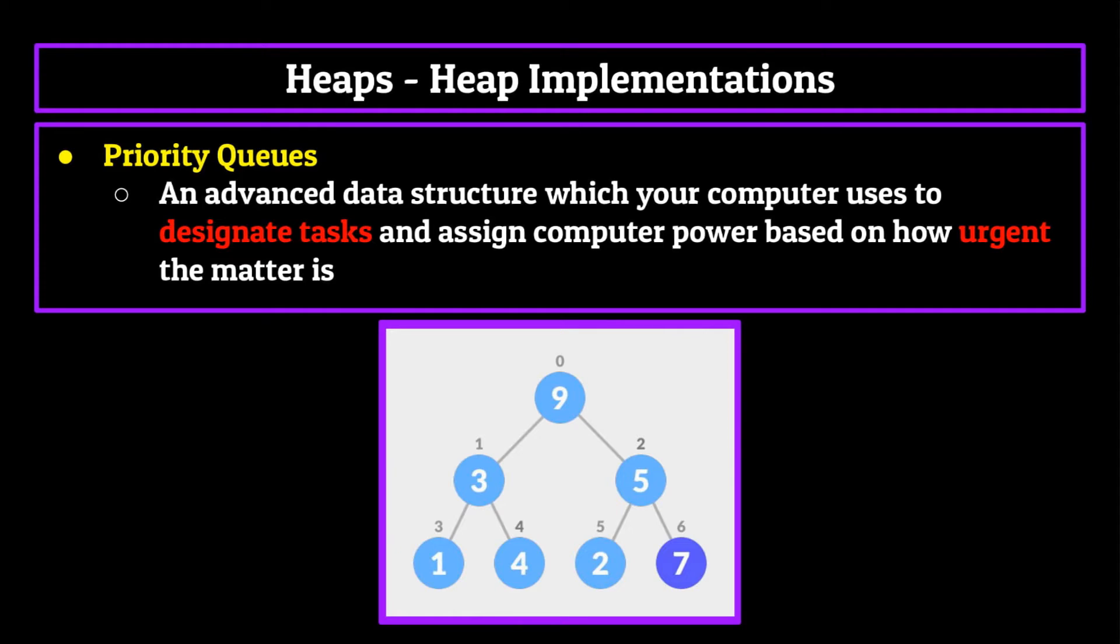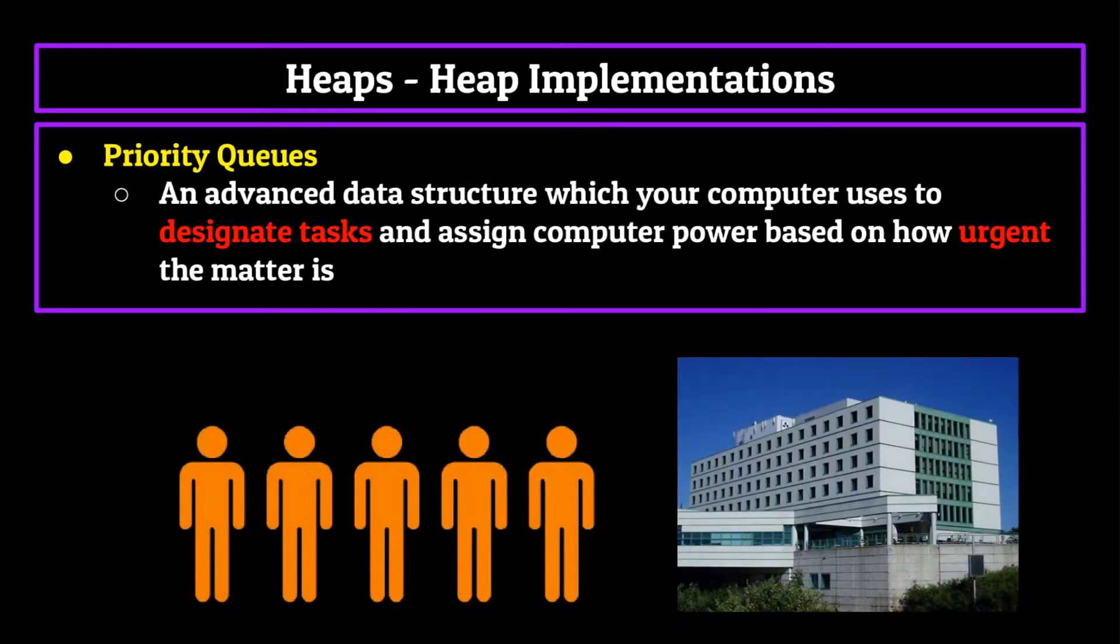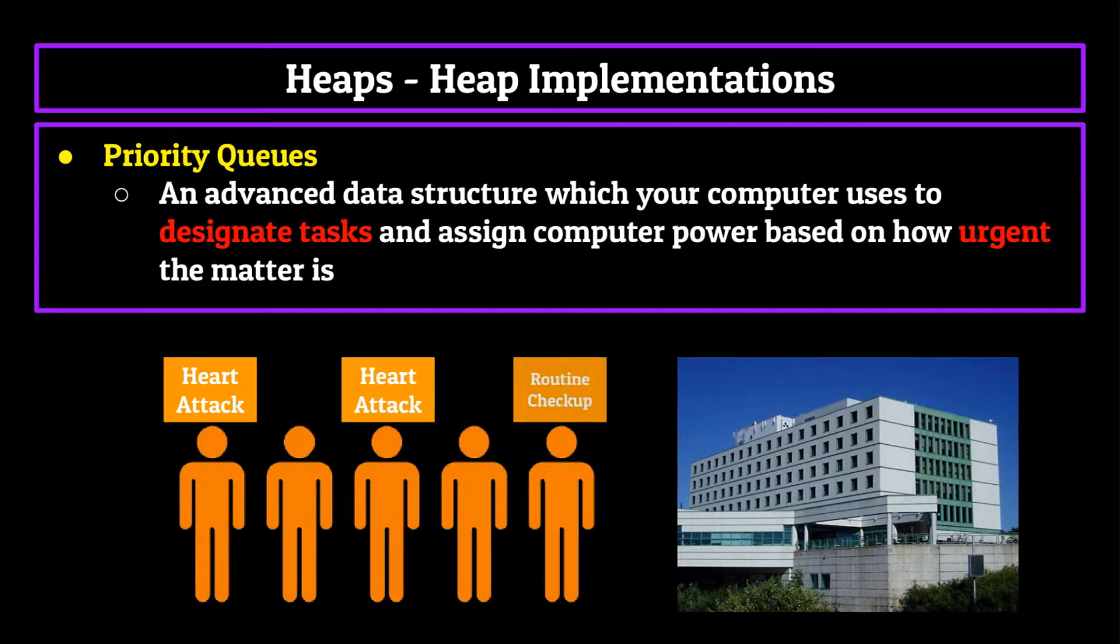Another extremely popular use of heaps is through the implementation of priority queues. Priority queues are an advanced data structure which your computer uses to designate tasks and assign computer power based on how urgent the matter is. Think of it like a line at the hospital, you wouldn't want your line to follow a regular queue that implements the FIFO or first in first out methodology. Since then you could have patients with extremely urgent matters like a heart attack, waiting behind people coming in for a routine checkup. In the same way, you wouldn't want your computer to update an application before it finishes rendering a video. Otherwise, your progress would be lost. Priority queues take care of all the task scheduling done by your computer, and the heap data structure is used as the backbone for it.